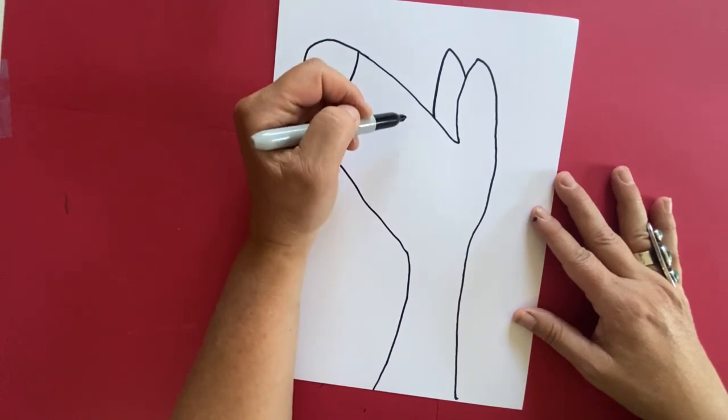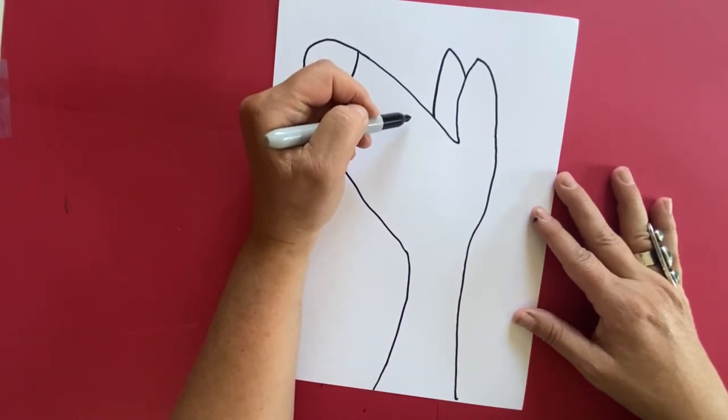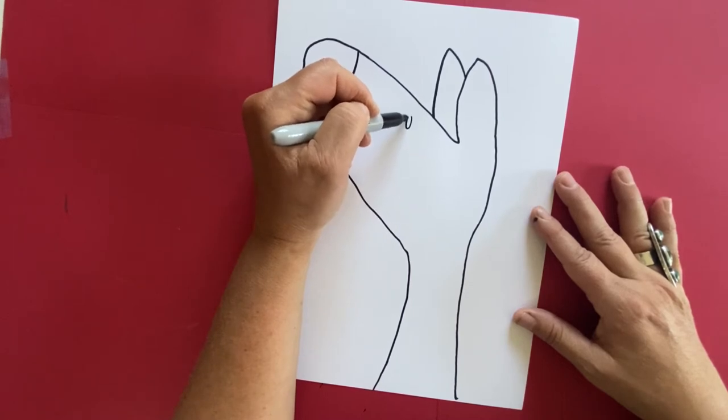Now let's make the eye of our zebra. You can make whatever style eye you want. I'm going to make an oval and I'm going to darken it in. You're going to be doing this in pencil and you can color it later.